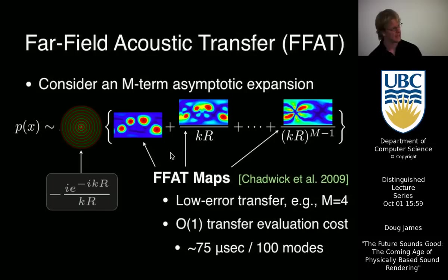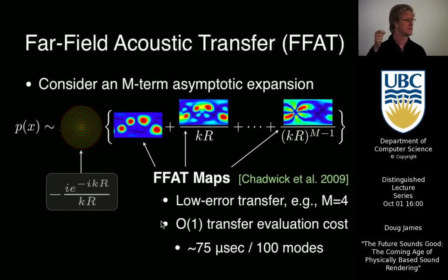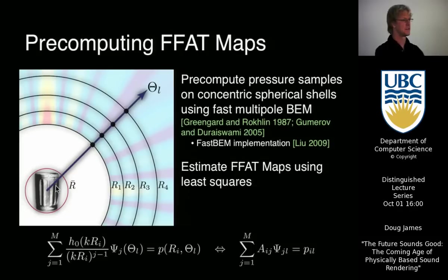This is work done by my student Jeffrey Chadwick and Stephen Ahn. These FAT maps basically allow a really simple asymptotic expansion that's trivial to evaluate and allows very low error transfer estimates. Instead of summing over lots of dipoles or a fast multipole expansion, you get basically a constant-time evaluation of the pressure at any point — which allows you to evaluate sound amplitudes for hundreds of modes in around 100 microseconds. These models are straightforward to compute, but we still need access to the transfer function in the first place, so we rely on one of the best algorithms of the 20th century — the fast multipole method — to basically evaluate the pressure around the object.